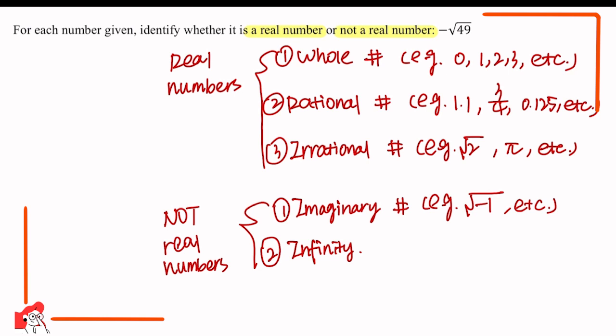Now you have got enough idea to solve this question — if you like, pause the video and try by yourself. Now let's solve this question step by step. Minus the square root of 49 will be equal to minus 7.